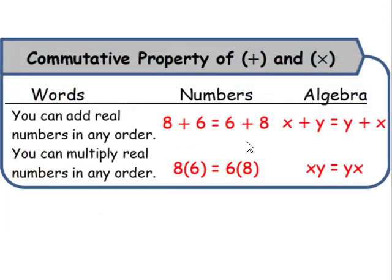The commutative property of addition and multiplication states that you can add real numbers in any order, and you can also multiply real numbers in any order.